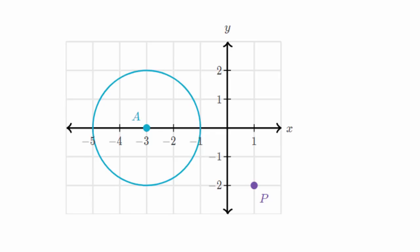What we're going to do in this video is think about what properties of a shape are preserved or not preserved as they undergo a transformation. In particular, we're going to think about rotations and reflections. Both of those are rigid transformations, which means that the length between corresponding points does not change.